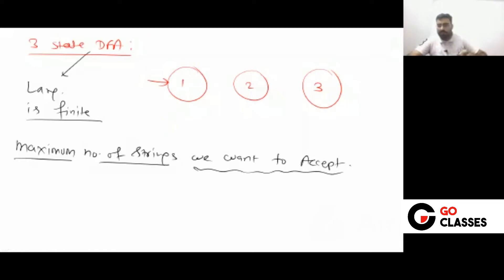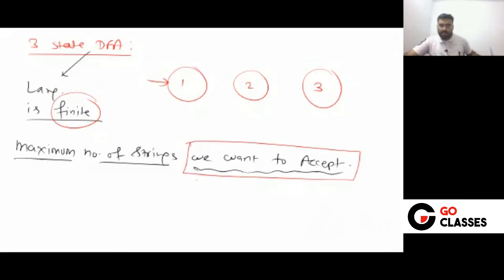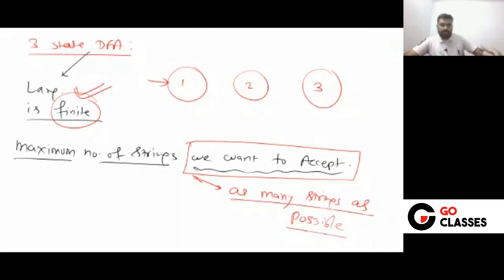Can you make all of them final? No. If you make all of them final, then the language will not be finite. The language must be finite. So if you make all states final, the language will not be finite. We want to accept as many strings as possible, but the language must be finite.